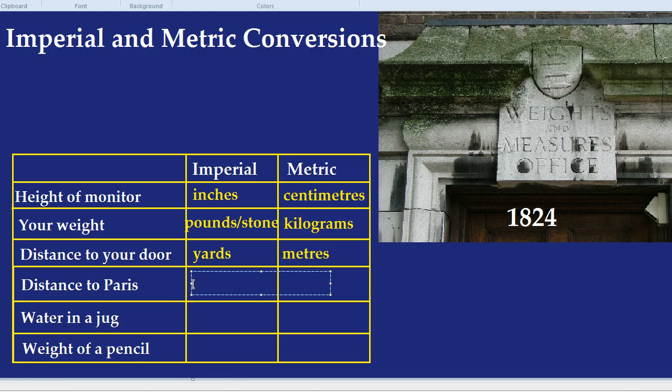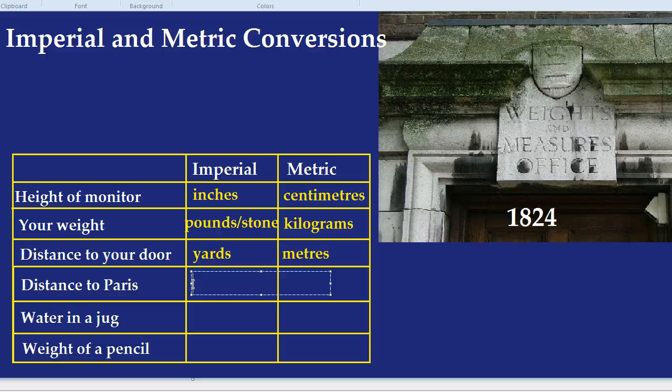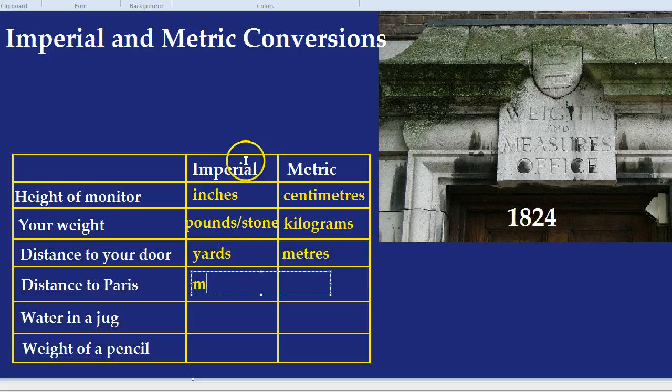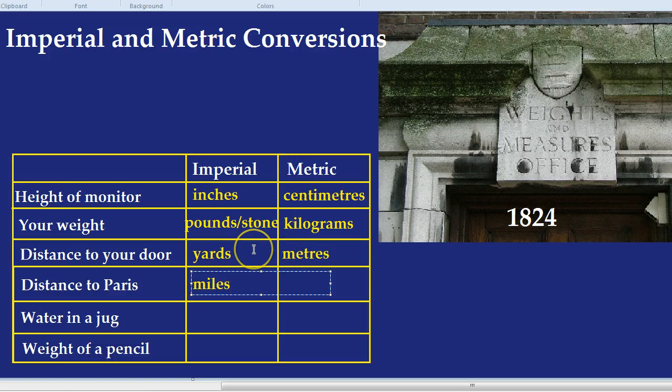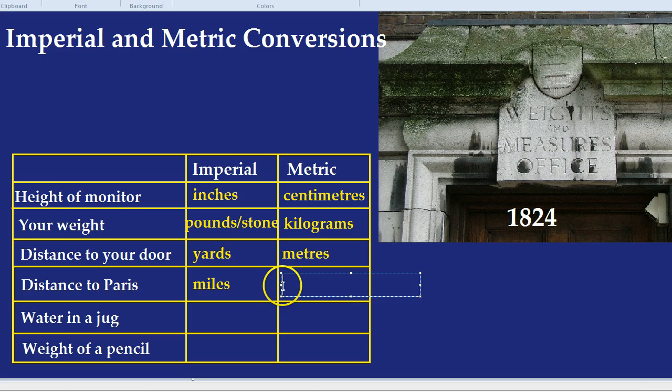What about the distance to Paris? And again, if you're in Paris, this might not quite work. But you can just sing along, drink coffee, and some wine, and it will all be fine. The distance to Paris in imperial, that would be miles. Miles is perhaps the imperial measurement used most frequently, even by those who often use metric measurements. The metric equivalent would be kilometres.